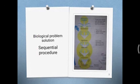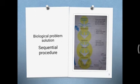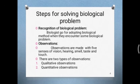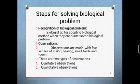As you know, solving a biological problem is a sequential process. Let me revise what we studied yesterday. We learned about biological problems — when a biological problem is identified, the scientist moves to the next step, which is observation, using their five senses. We also studied two types of observations: qualitative and quantitative observation.